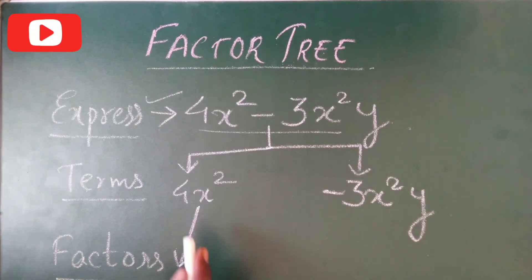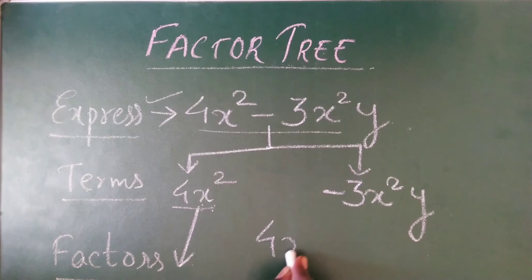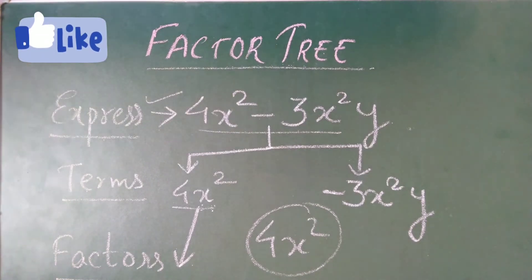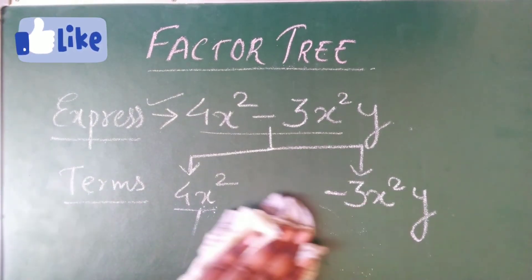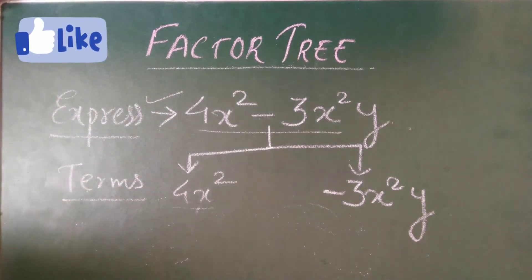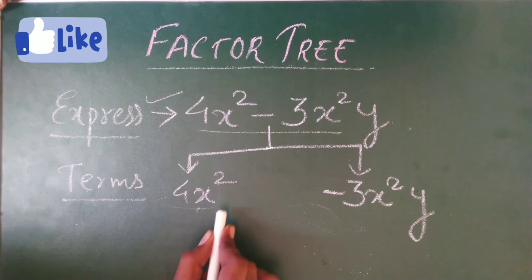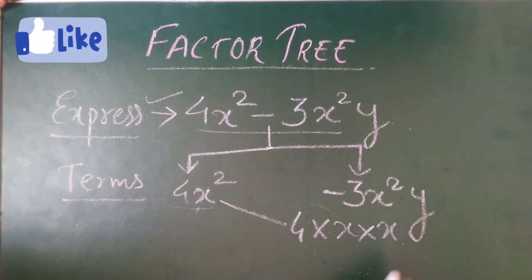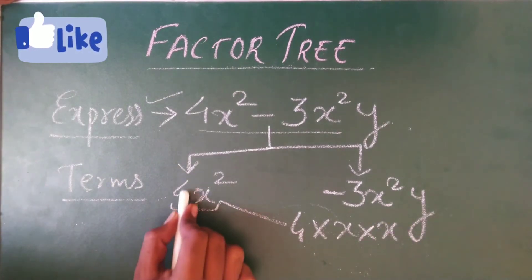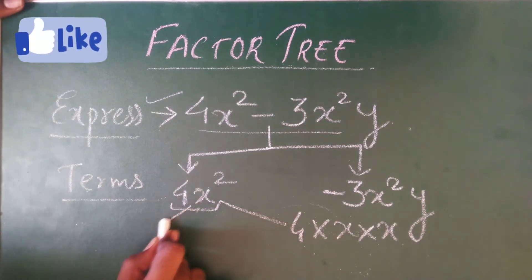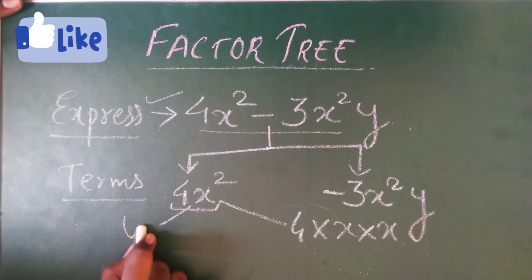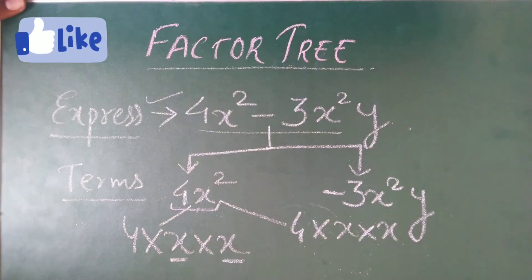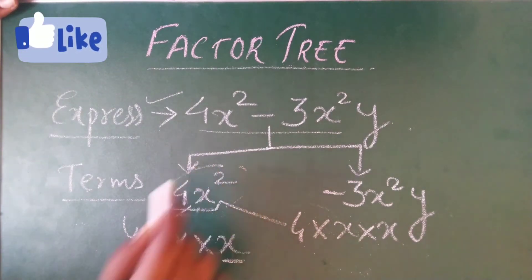Factors basically means you split up the term. Consider 4x² — we can write it as 4 × x × x, because x multiplied by x gives x², and times 4 gives 4x². So factors means splitting the term into individual multiplied parts.